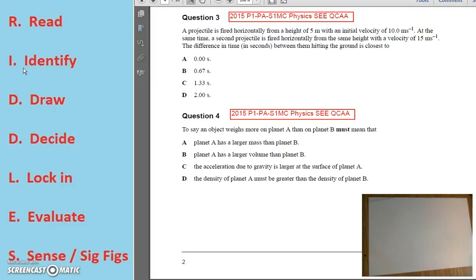That is an initial horizontal velocity of 10 metres per second. At the same time, a second projectile is fired horizontally from the same height with a velocity of 15 metres per second. Again, that is a horizontal velocity of 15. The time difference in seconds between them hitting the ground is closest to?